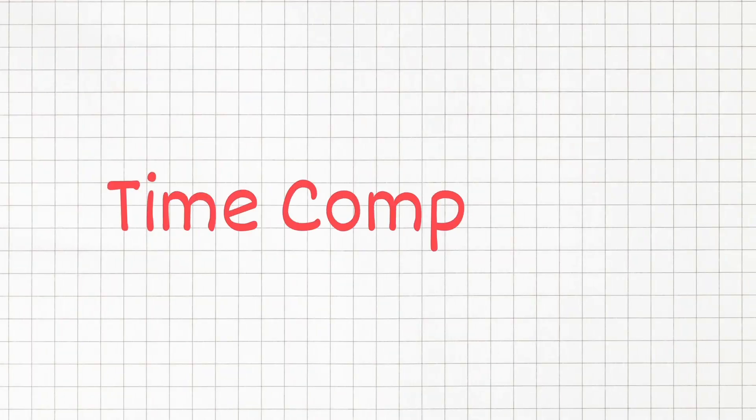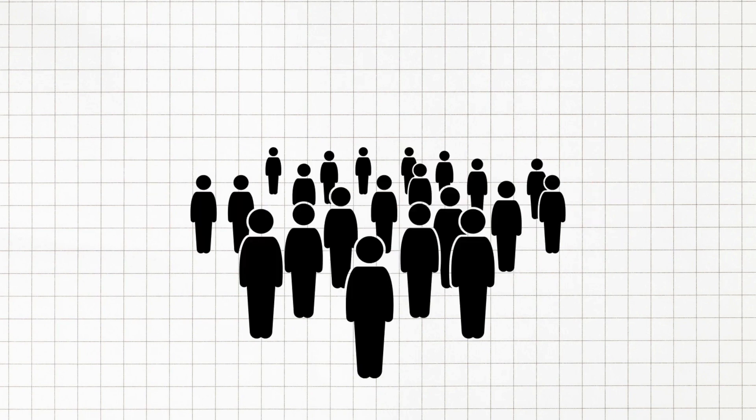So let's start by talking about time complexity. Imagine you're at a concert, and you're trying to find your friend, Bob, in a crowd. One way you might do this is by going through each person in the crowd, one by one, and asking if it's Bob.